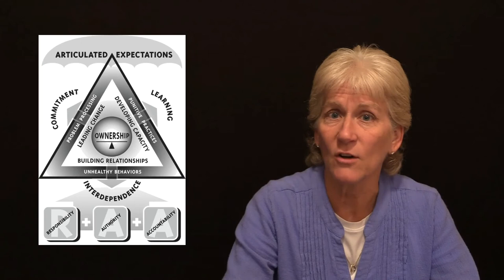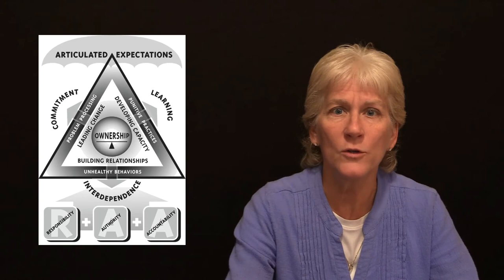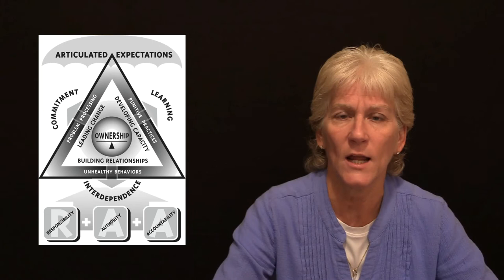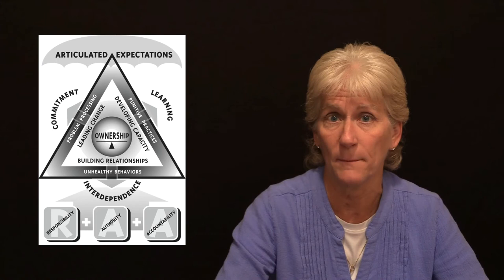The model starts at the center with ownership. In the center of this triangle, you'll see ownership. Ownership is the starting point of this model. We need to own our practice, our work, our service, not just feel like we own it. We own it. We are the organization. And we need to know how to look at that, how to define that, how to clarify that, how to talk about that. So we're going to start in ownership and look there.